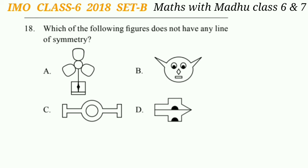Question 18: Which of the following figures doesn't have any line of symmetry? Looking at the figures, the figure in option D doesn't have a line of symmetry. So the answer will be option D.